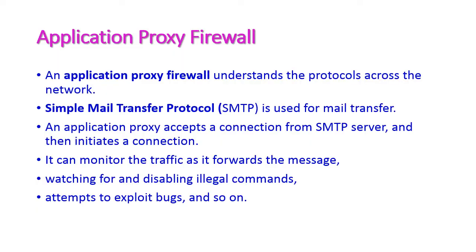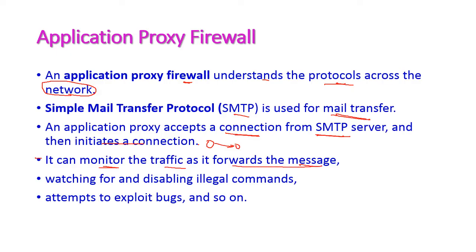The next type is the application proxy firewall. It understands the various protocols used across the network for communication. For example, take the SMTP protocol — Simple Mail Transfer Protocol — which is used for mail transfer. An application proxy accepts the connection from an SMTP server and then initiates a connection between the system and the SMTP server. This proxy server can monitor traffic as it forwards messages, watching for illegal commands and attempts to exploit bugs.